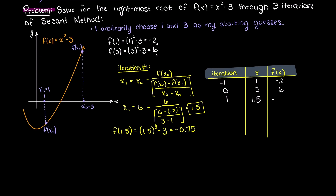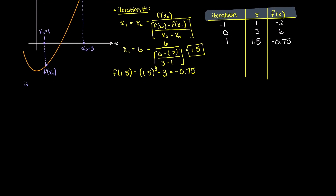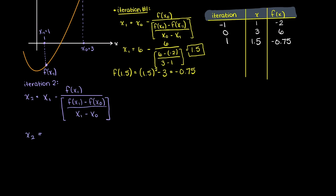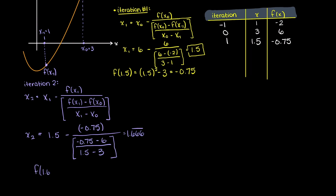And that is really how simple the secant method can be. Let's just repeat this process two more times to get our required three iterations. Let's rewrite our general secant formula for our second iteration. Now we can just go ahead and fill in all the variables with our known values, and we are left with an x value of 1.666 repeating.